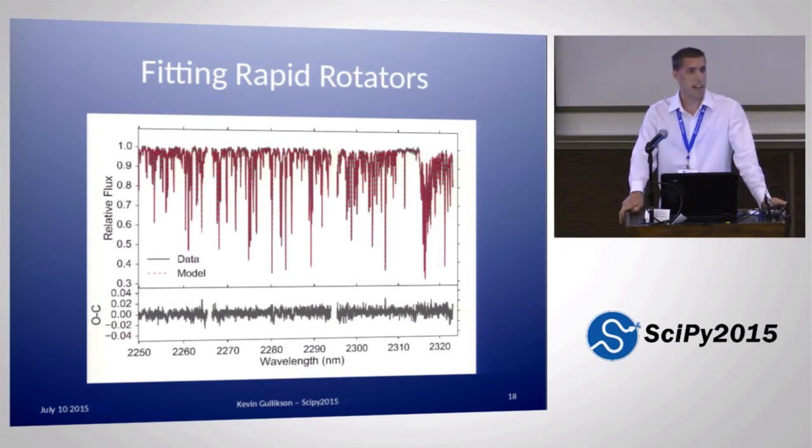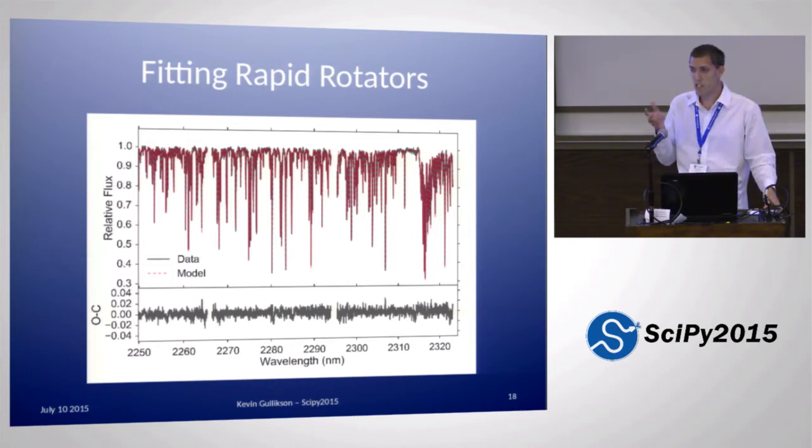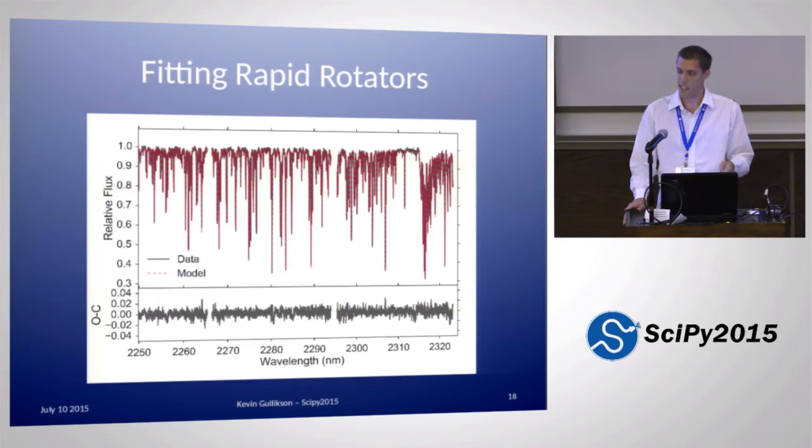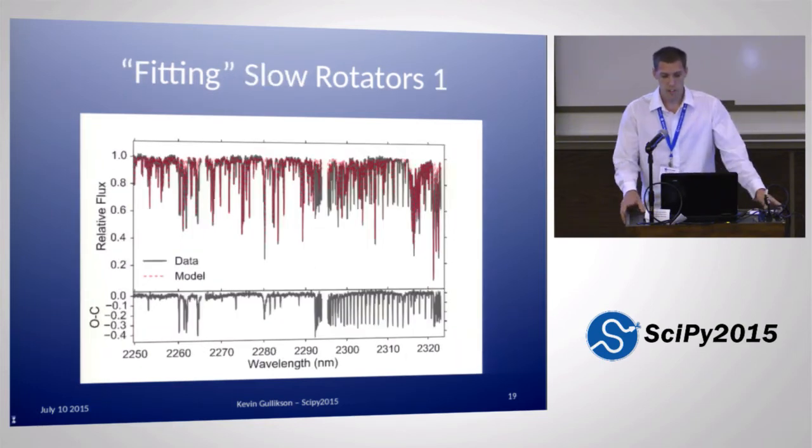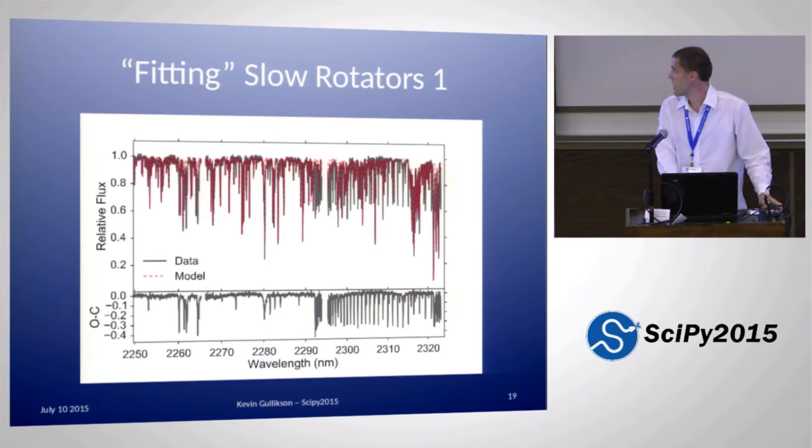The rest of this talk will basically be looking at how good it does on some data. I have most of my data is actually of these hot, rapidly rotating stars. These stars have very few features, so the residuals should look like noise if we're doing a good job. The top panel is the data in black and the best fit model in red. The bottom panel is the difference between the two. It mostly looks like noise even for pretty deep telluric lines, which basically tells us that we're doing good. But these are the easiest ones to do because they don't have any sharp features on their own.